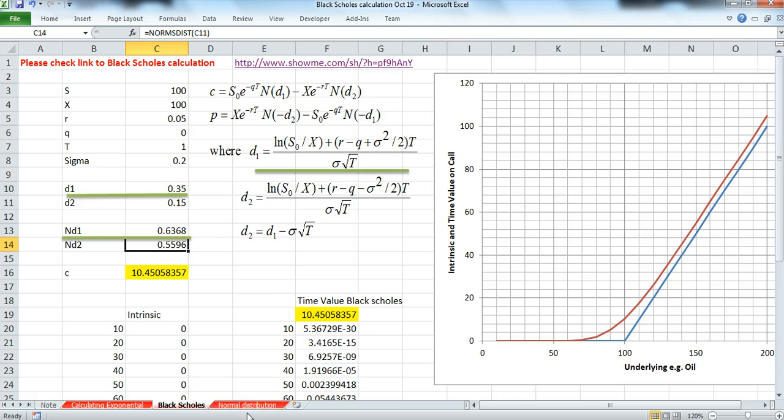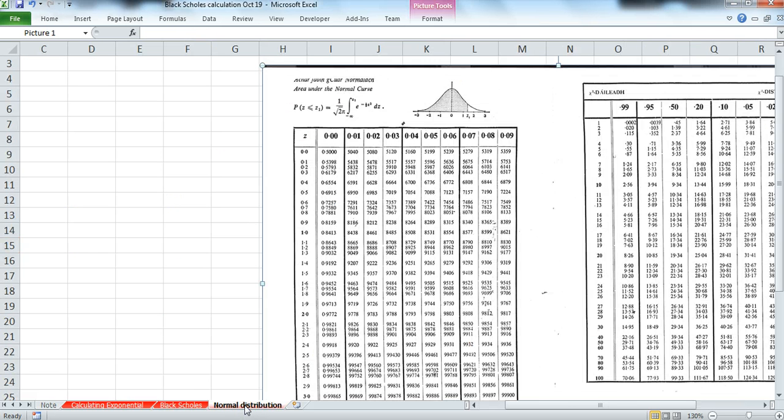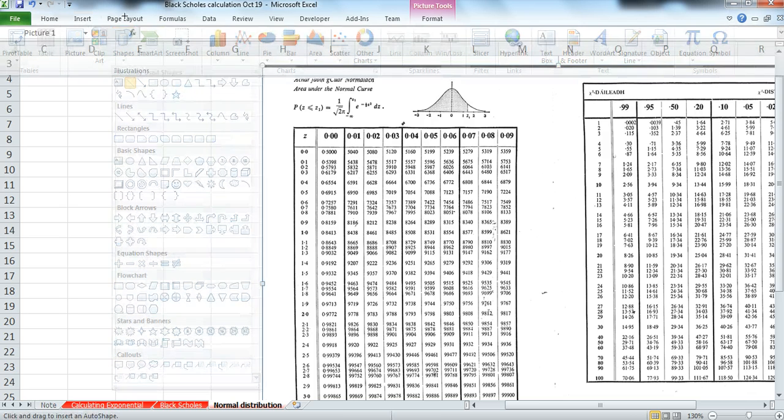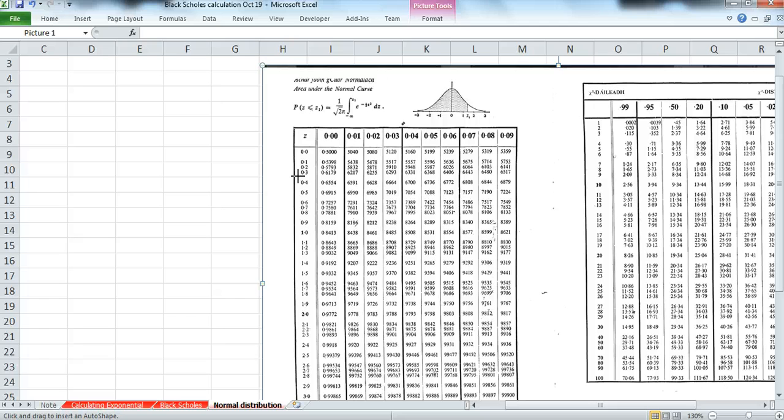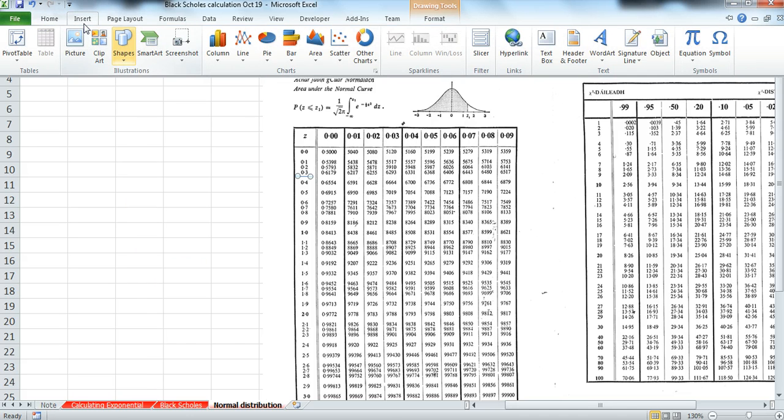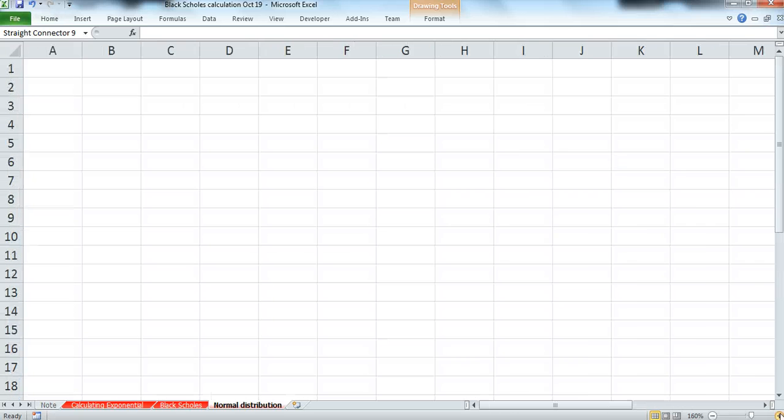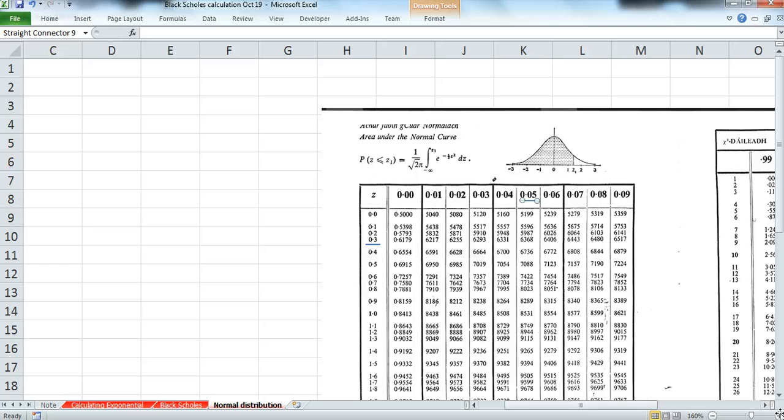or go to the tables and in this case it would be a question of going to 0.3 and going to again 0.5 and then taking the value of 0.368.